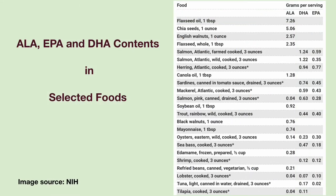ALA is present in certain plants. Flaxseed oil, flaxseed, chia seeds, walnuts, canola oil, and soybean oil contain high amounts of ALA.